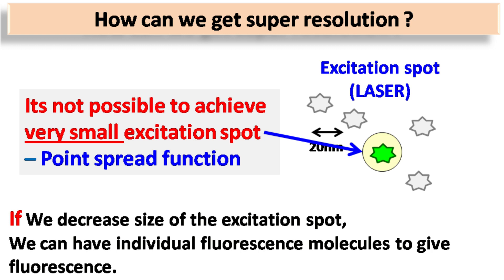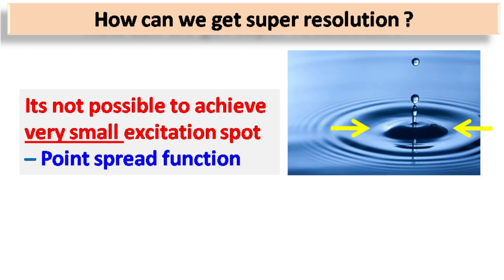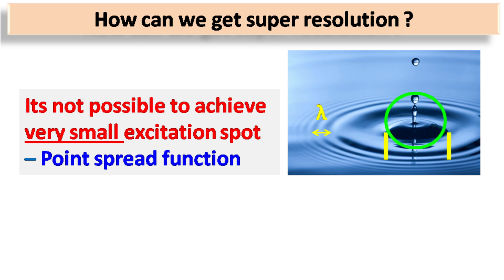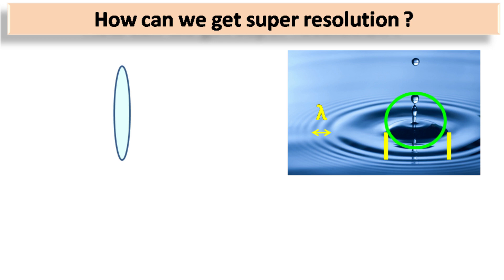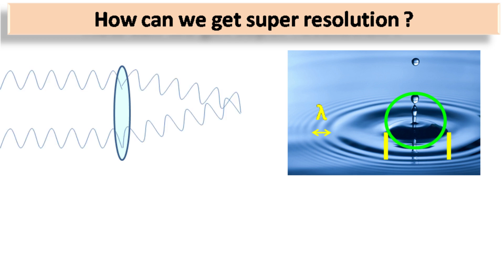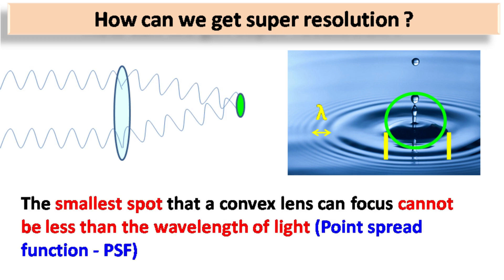This phenomenon is known as the point spread function. To understand point spread function, consider an imaginary example where water waves try to meet at a point. You will notice that the diameter of the central bulge region where the water waves meet cannot be less than the wavelength of the water waves. A similar situation arises with light when light is focused in a small region using a convex lens.